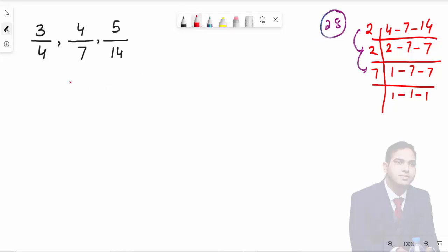Now you need to make all denominators 28. Start from the first fraction, 3 over 4. Multiply the denominator 4 by 7 to make it 28, and multiply the numerator 3 by 7 as well. So the answer is 21 over 28.